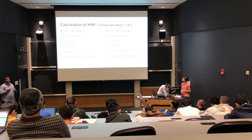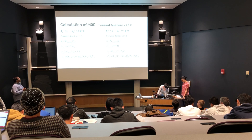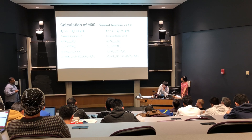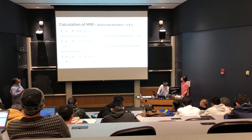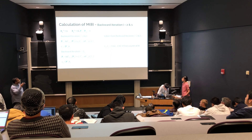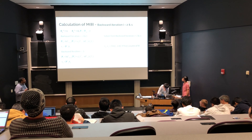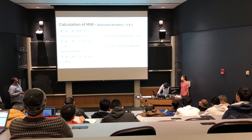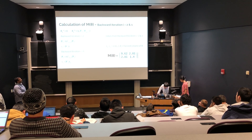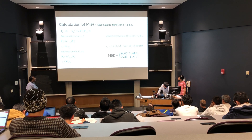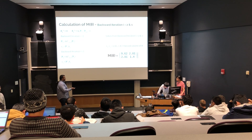For the mass matrix calculation, we use the same steps but with a different setup: g is zero, theta dot is zero, and we set theta 1 double dot to 1 and theta 2 double dot to 0 in the first call. After the forward and backward iterations, we get one vector [tau1, tau2], which is the first column of the mass matrix. Then for the second column, we swap theta double dot to get the second column. The resulting two-by-two m(theta) matrix is symmetric and gives us all required elements for forward dynamics.